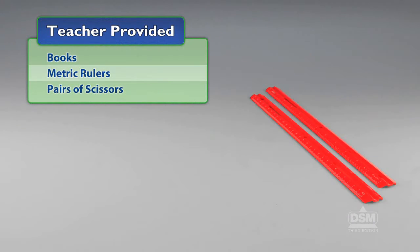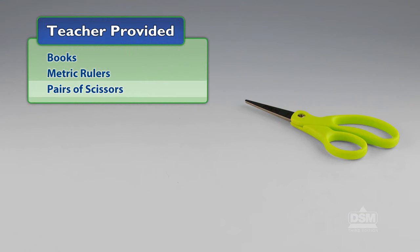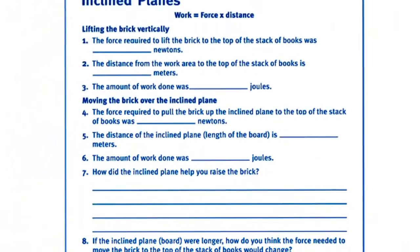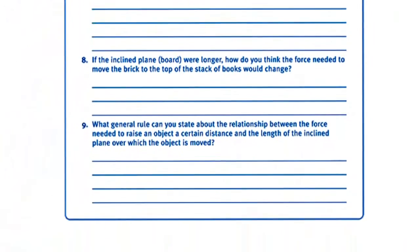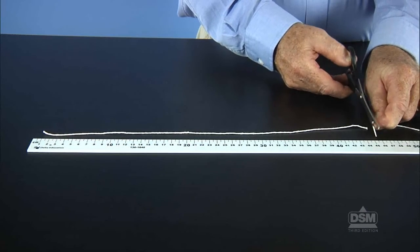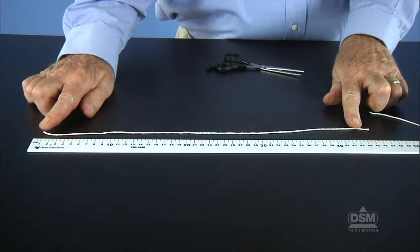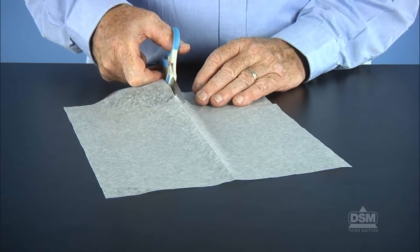You will also need to provide books, metric rulers, and pairs of scissors. To prepare for the activity, make a copy of activity sheet nine for each student. Start by cutting a piece of string 45 centimeters long for each team and cut each sheet of wax paper in half.